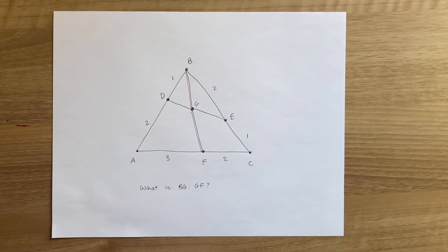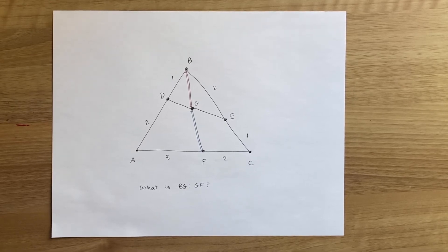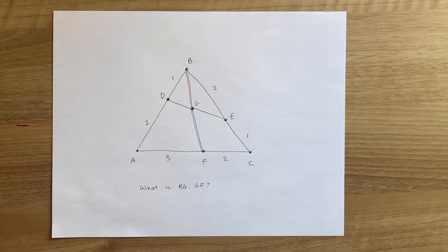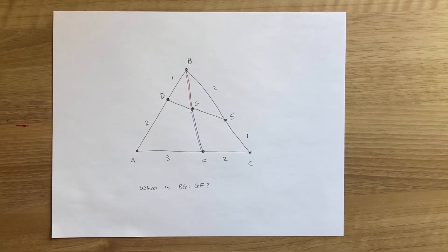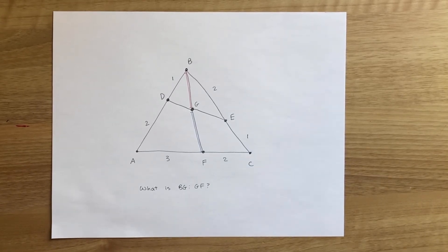Now, finally, let's get to our problem from the beginning. In this case, we don't have concurrent cevians, so it wouldn't work to use regular mass points. So instead,